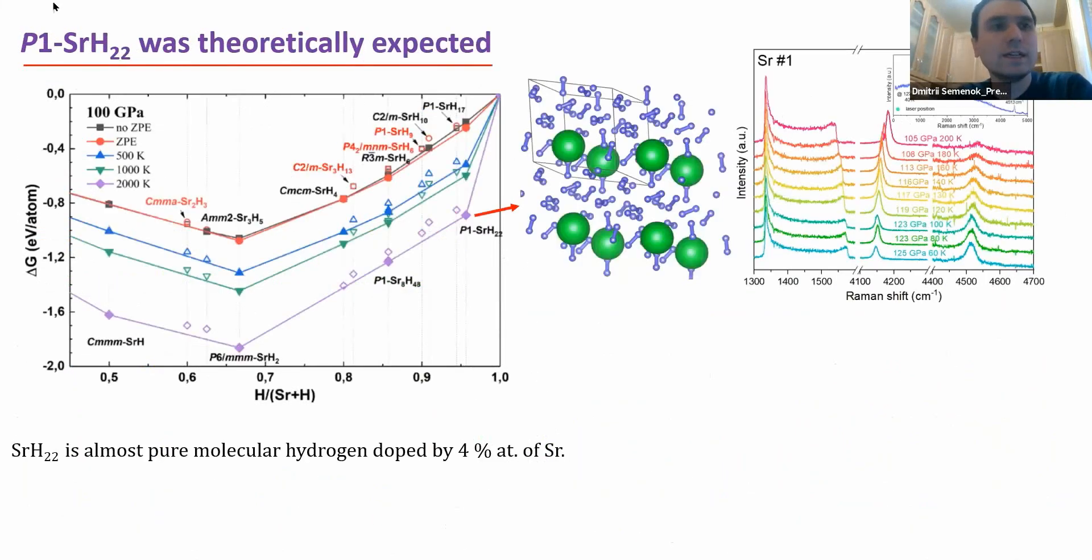As I told, strontium H22 was theoretically expected by us. We found using the USPEX code, crystal structure search using USPEX program, we found that actually a lot of strontium hydrides are on the convex hull, should be thermodynamically stable. Among them there is strontium H17, strontium H34 and especially strontium H22 which is shown in this line in this picture. We found that this compound should be thermodynamically stable with accounting zero-point energy and without accounting zero-point energy in quite wide temperature range from zero to 2000 Kelvin. And you see that when we increase the pressure, stabilization of this compound even increases.